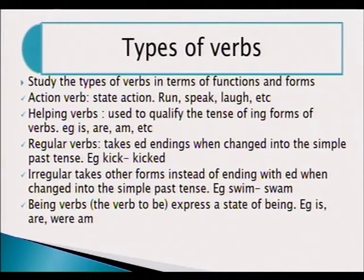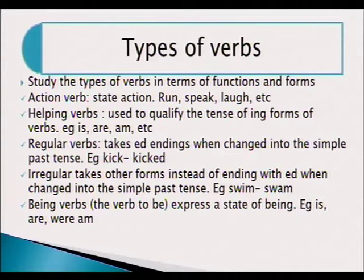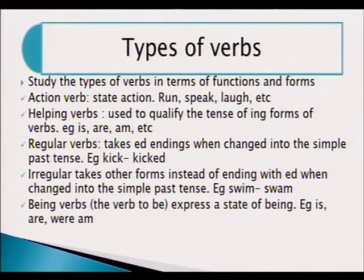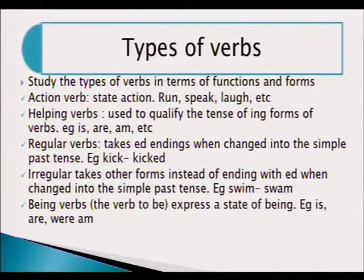Then there are helping verbs — used to qualify the tense of -ing forms of verbs. For example, 'running': we can say 'he is running', which brings the tense. If we say 'he was running', we know 'was' brings the past tense form. But if we use 'is', then we know the sentence is present continuous. Other words that can be used as helping verbs are: are, am, were.